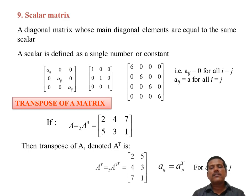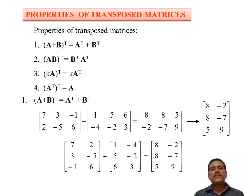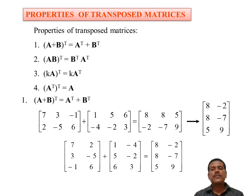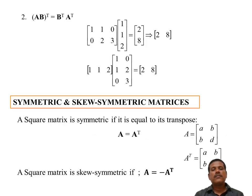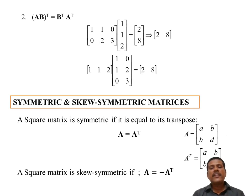Transpose of a matrix: transpose means interchanging rows and columns of a given matrix. Properties of transpose: (A+B) transpose equals A transpose plus B transpose; AB whole transpose equals B transpose into A transpose; k into A whole transpose equals k into A transpose; and A transpose whole transpose equals A. Symmetric matrix: if A transpose equals A, then A is called a symmetric matrix. If A transpose equals minus A, that is called a skew symmetric matrix.